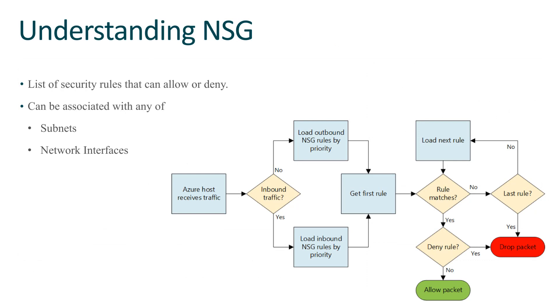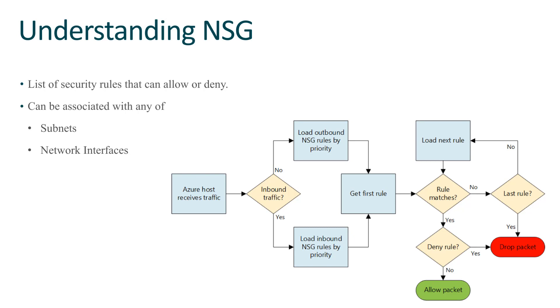A network security group is a list of rules that you can allow or deny. Many people when they first look at network security groups think of them as a firewall — they're not really a firewall, although that's one of the functions they serve. That list of rules can be assigned to a subnet or an interface. You can create one master list representing the general rules on traffic you allow within your VNet and assign that to all subnets. You can then take individual VMs, create an additional network security group specific to that VM, and assign it to only those interfaces, thereby further restricting those VMs with custom rules based on their role. For example, you may allow HTTP everywhere within all your subnets but block it on domain controllers — one overall NSG for all subnets, and a second NSG assigned only to domain controllers blocking HTTP.